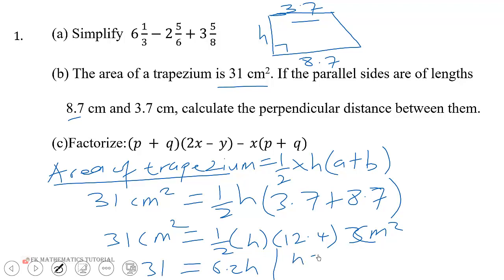So h will be equal to 31 over 6.2. So 31 divided by 6.2. Let us now change the 6.2 to decimal, so we are going to get h to be equal to 31.